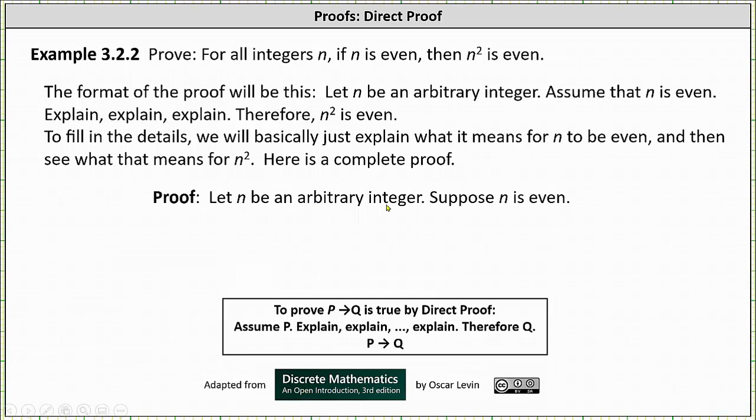To begin, let n be an arbitrary integer. Suppose n is even. Then n = 2k for some integer k. Now n² = (2k)² = 4k² = 2(2k²).